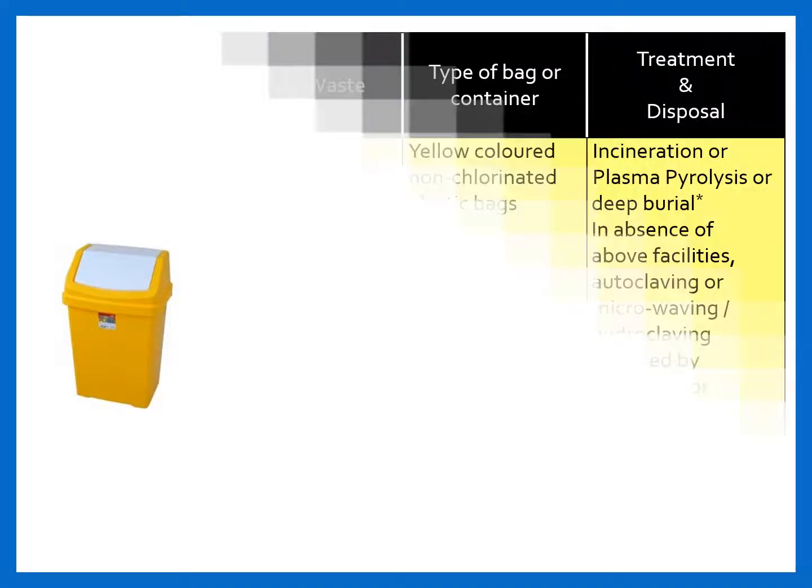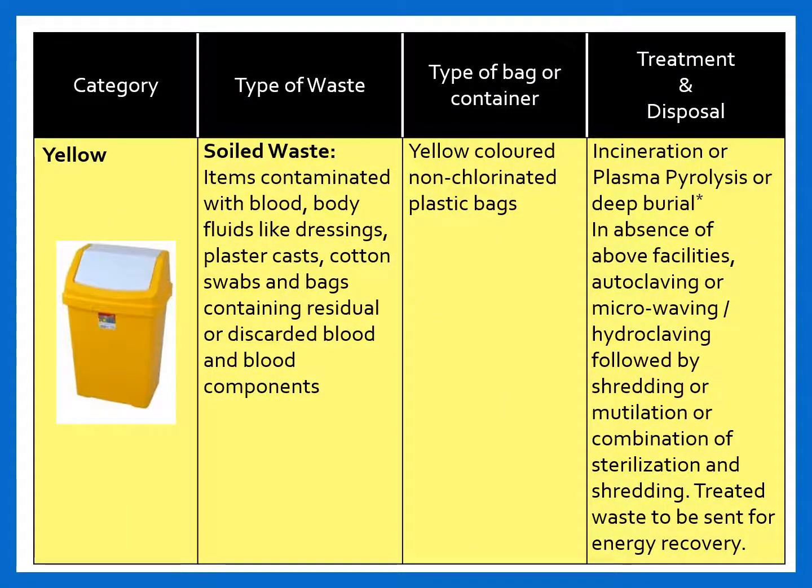The next type of waste is soiled waste — primarily items contaminated with blood or body fluids, like dressings, plaster casts, cotton swabs, and bags containing residual or discarded blood and blood components. These are discarded in yellow colored non-chlorinated plastic bags. The disposal mechanism is incineration or plasma pyrolysis, or deep burial. In the absence of these facilities, autoclaving, microwaving, or hydroclaving followed by shredding or mutilation, or a combination of sterilization and shredding, are practiced.